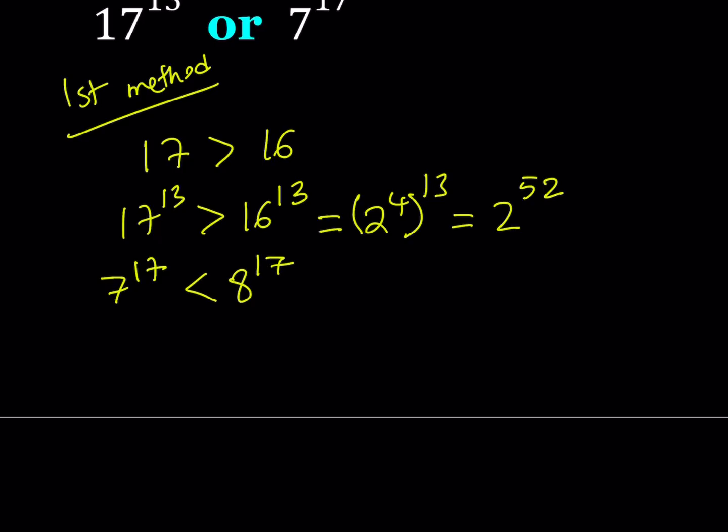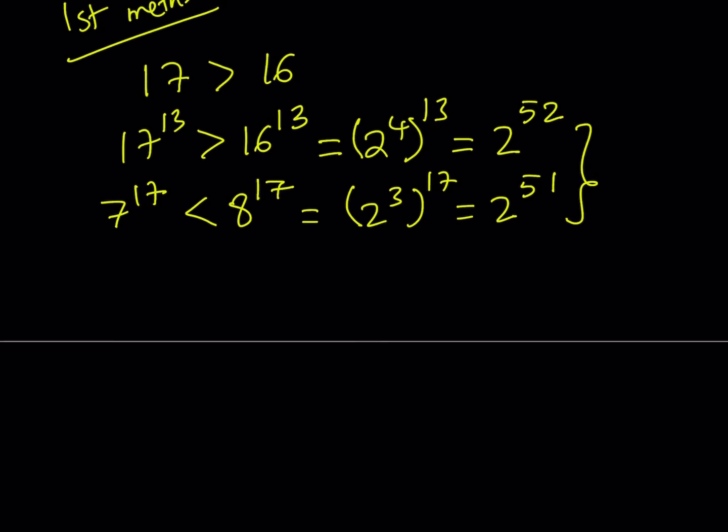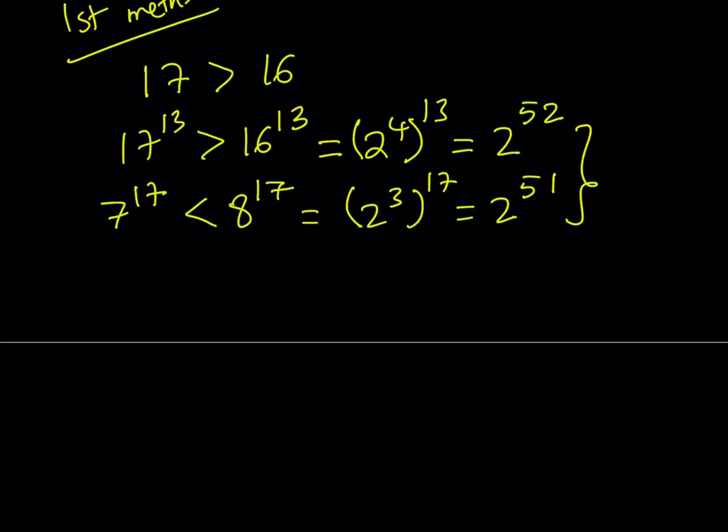Since 8 can be written as 2 to the third power, and I think we've done a similar problem a while ago, I can also include the link down below. This is going to be 2 to the power of 3 to the power of 17, which can be written as 2 to the power of 51. Those numbers are pretty close. So now we know that 2 to the power of 52, obviously, is greater than 2 to the power of 51.